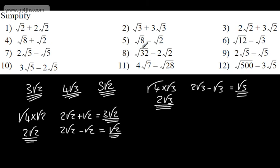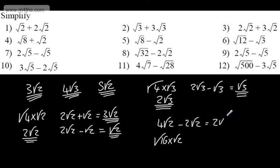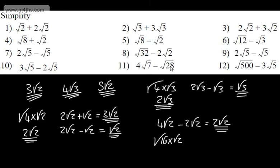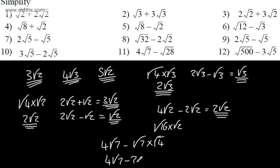This next one is quite nice — after a while you'll spot it. 2 to the power of 5 can be written as 4 root 2, or as root 16 multiplied by root 2. We subtract 2 root 2, giving us 2 root 2. For the following one, we can write it as 4 times 7, so we have 4 root 7 minus root 4 times root 7, which gives 4 root 7 minus 2 root 7, equalling 2 root 7.